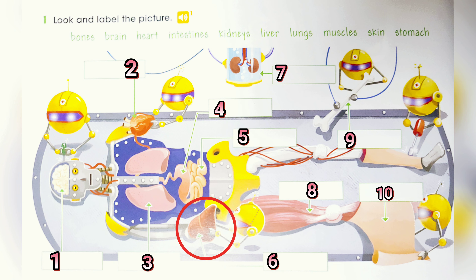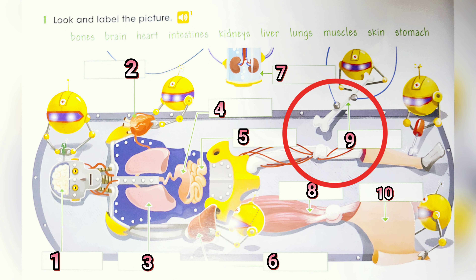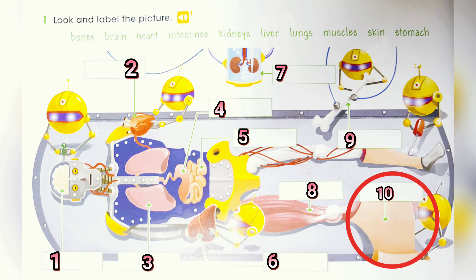Number six: What's this? It's the liver. Number seven: What are these? These are the kidneys. Number eight: What are these? These are muscles. Number nine — these are white and hard. What are these? These are bones. And number ten: What's this, all over the body? It's skin.